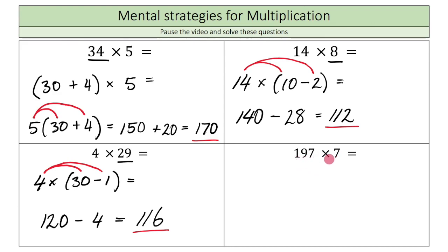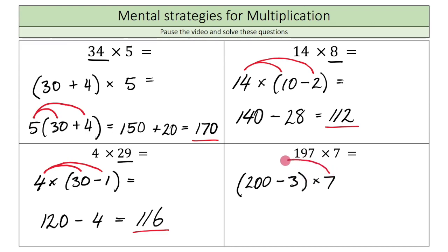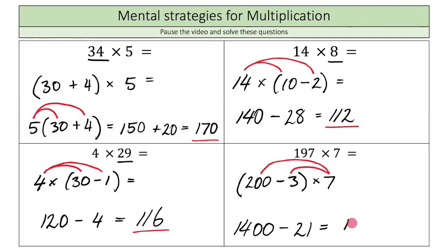Last but not least: 197 times 7. I'll break 197 as 200 minus 3, so it's (200 minus 3) times 7. Remembering our commutative property, I distribute the 7: 7 times 200 — since 7 times 2 is 14, adding two zeros gives 1400 — minus 7 times 3 is 21. So 1400 minus 21 equals 1379.